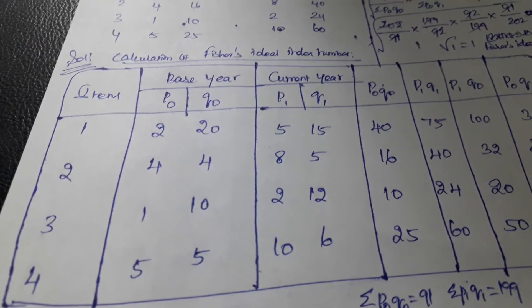Now it is time to test. First we test according to the time reversal test. The condition is P01 multiplied by P10 equals 1. We take the P01 formula and multiply it with the P10 formula, then put in the proper values. We get the square root of 1, which equals 1. So Fisher's Ideal Index satisfies the time reversal test.